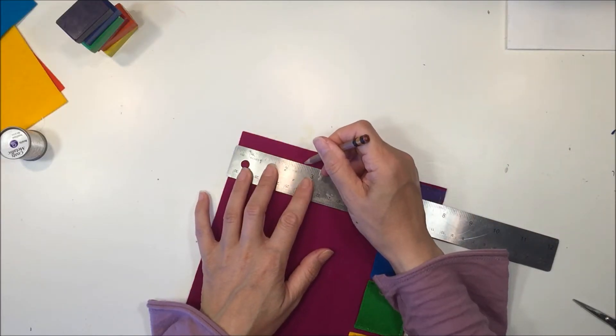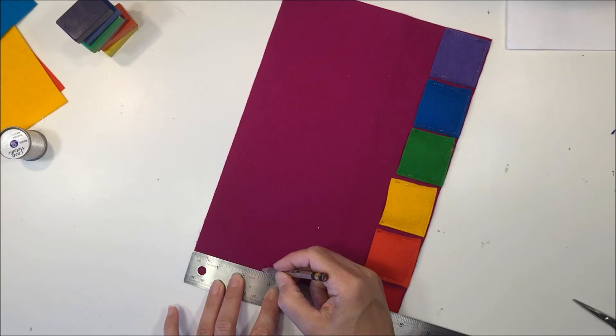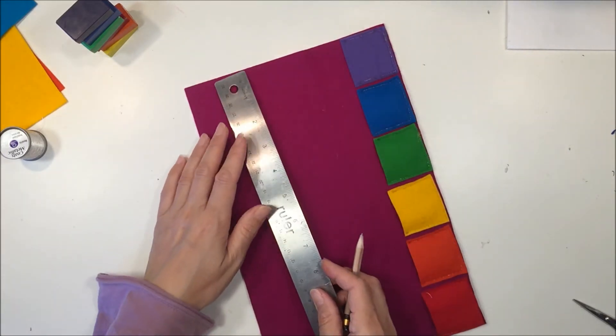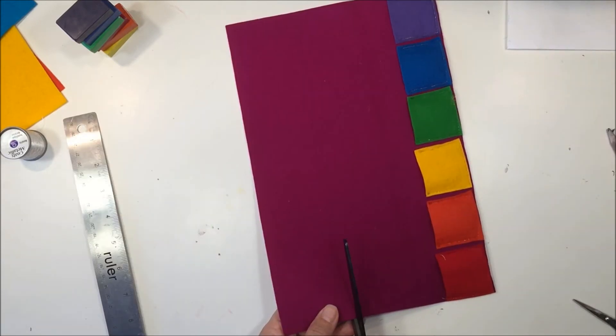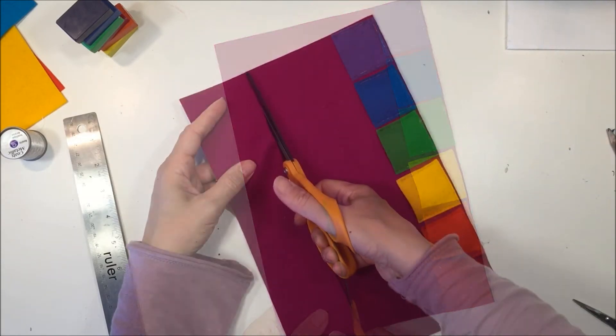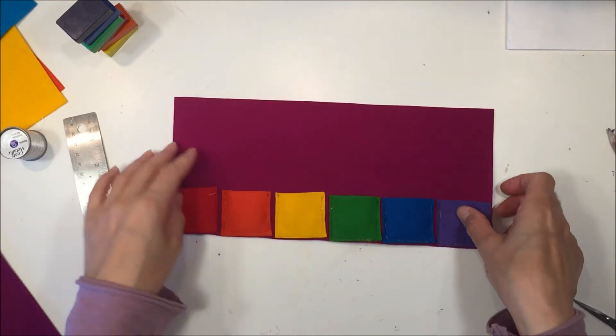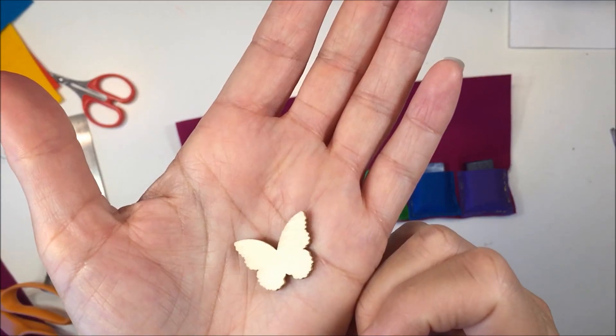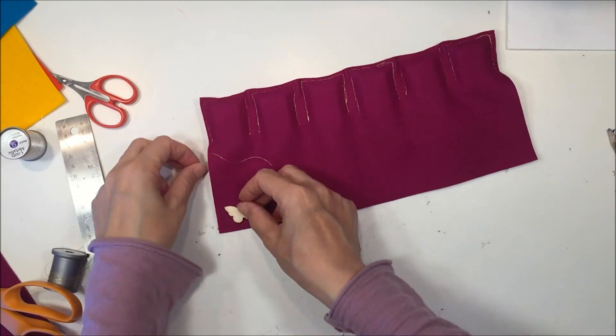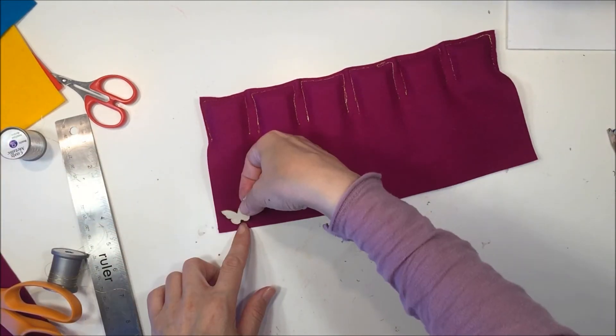Next I can go ahead and trim off the excess felt here because I didn't know exactly how much I was going to need, so I kind of waited till my last step. Then it folds over just enough to cover the crayons. I did want to add a little decoration here to the outside, a little butterfly.